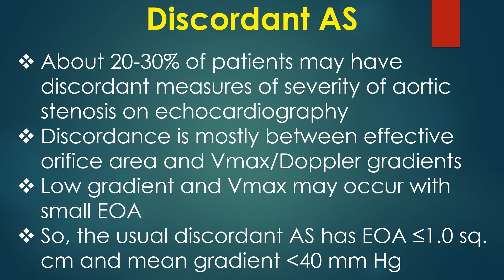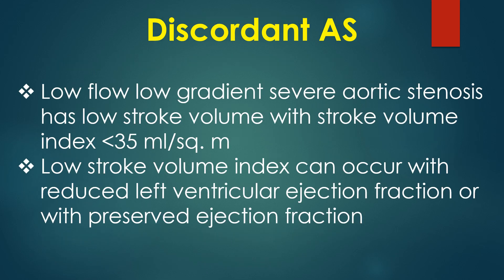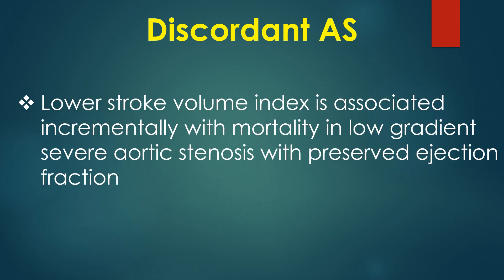Low gradient and Vmax may occur with a small effective orifice area. The usual discordant AS has effective orifice area ≤ 1 cm² and mean gradient < 40 mmHg. Low flow low gradient severe aortic stenosis has low stroke volume with stroke volume index < 35 ml/m². Low stroke volume index can occur with reduced or preserved left ventricular ejection fraction. Lower stroke volume index is associated incrementally with mortality in low gradient severe aortic stenosis with preserved ejection fraction.